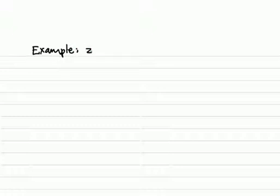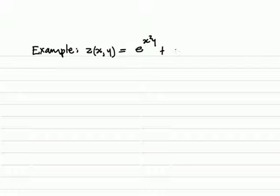Continuing on partial differentiation, let's look at another example. Let's say z(x,y) equals e to the power of x squared y plus 2x.